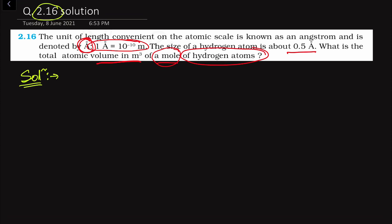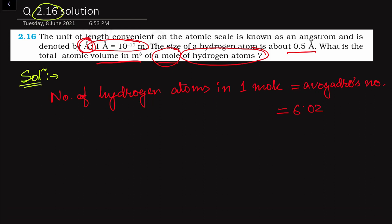In one mole of hydrogen atom, we need to understand how many hydrogen atoms are there. We know that the number of hydrogen atoms in one mole is equal to Avogadro's number, which is 6.023 into 10 to the power 23. It does not have any unit because it is simply a number — this many hydrogen atoms are present in one mole of hydrogen.